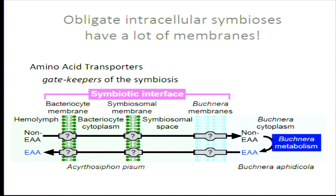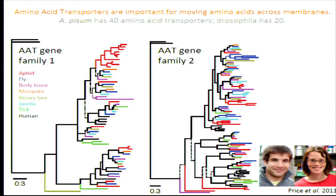We identified all the nutrient amino acid transporters in the pea aphid genome — work done by Dan and Rebecca Duncan in my lab. One thing we discovered was that where Drosophila has 20 amino acid transporters in these two families, the pea aphid has 40, including a big expansion. There's a large expansion in the pea aphid relative to the Drosophila Slimfast clade, which led me to speculate that duplication of amino acid transporters may be characteristic of host-genome evolution in systems with obligate intracellular symbionts.